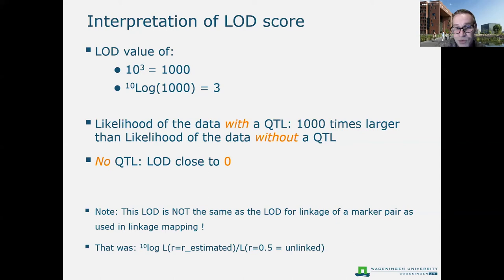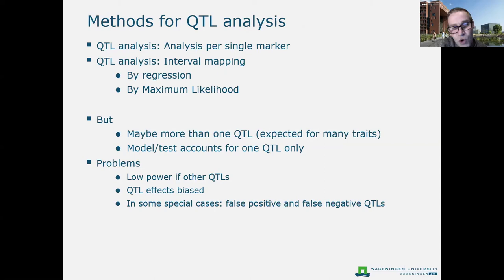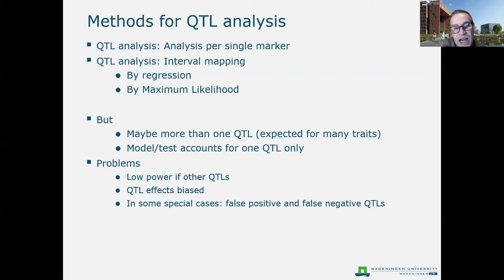We get a smooth plot with LOD score on the y-axis against map position on the x-axis, testing at every possible position. These models are still single QTL models and don't account for multiple QTLs. In reality, most quantitative traits are determined by multiple QTLs, so assuming only a single QTL model could give us low power.